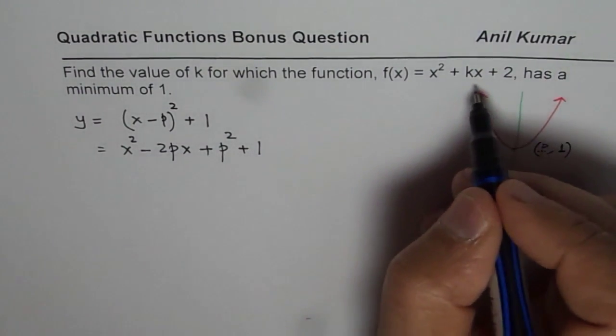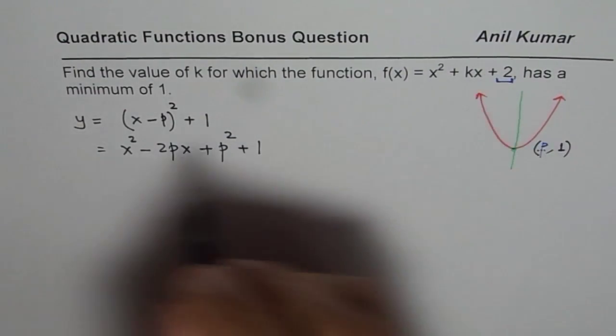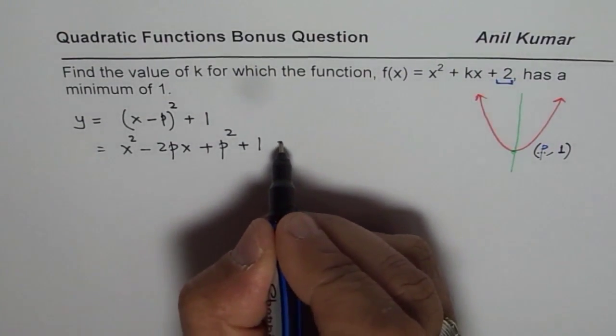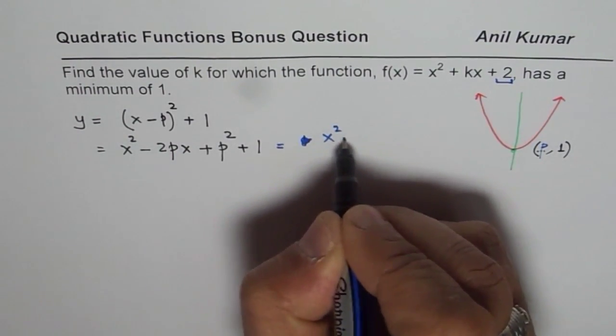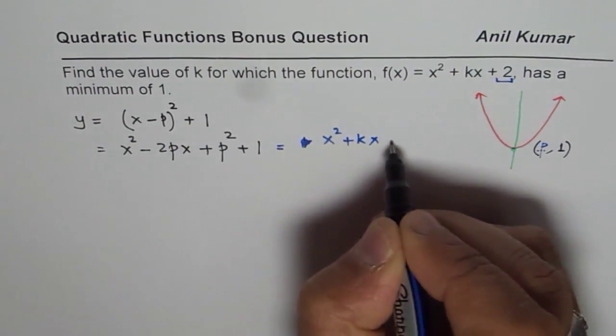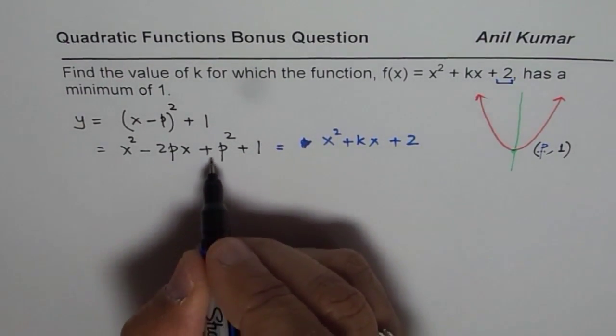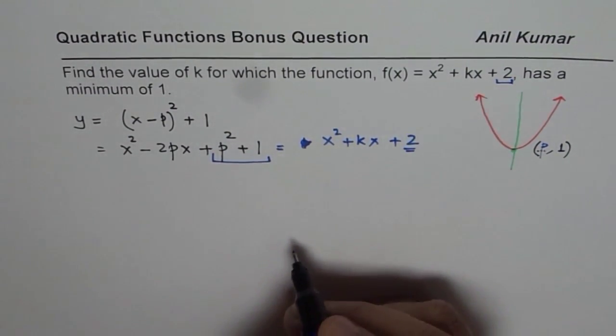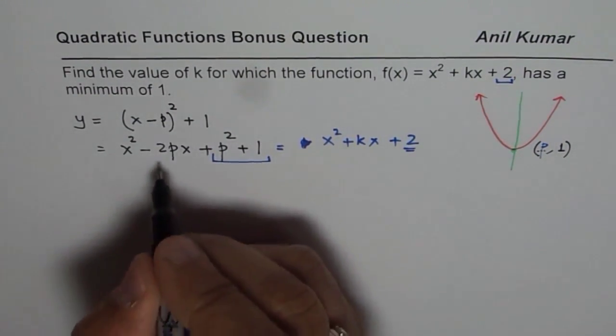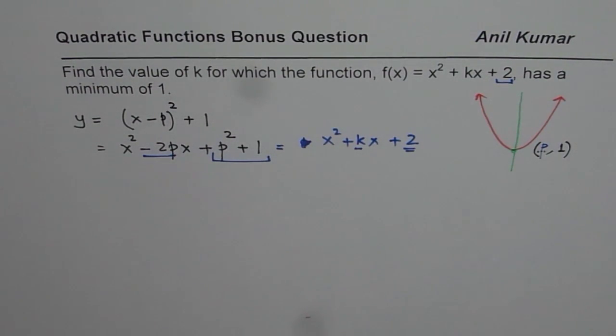But if we compare these two equations, then what do we notice? We know that if these two are same, if this is equal to x squared plus kx, because that is the equation given to us, then when we compare them, what do we get? We get that p squared plus 1 should be equal to 2. That is the constant part. And minus 2p equals k. So that is how these equations are related.